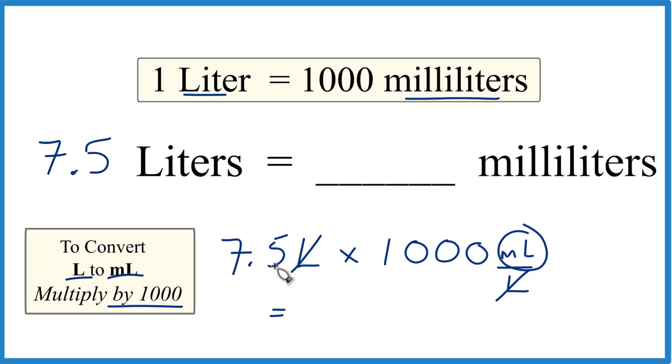So we end up with 7.5 times 1,000 milliliters is 7,500 milliliters. So answer to our question, 7.5 liters is 7,500 milliliters.